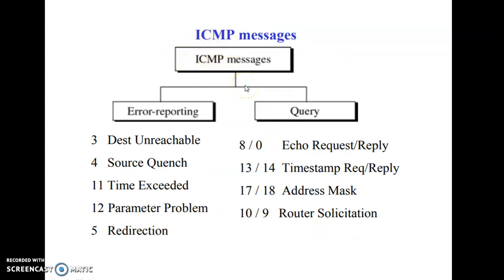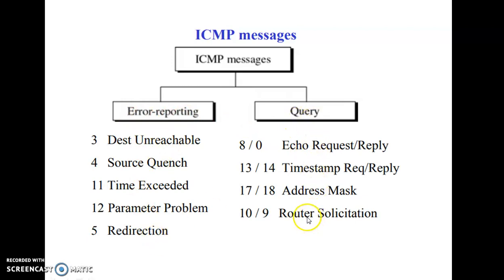ICMP protocol was designed to solve issues in the network layer and make the IP protocol reliable in some way. To achieve this, it has two kinds of messages: the first is the error reporting message and the second is the query message. Under error reporting there are five different types, and under query messages there are four different types.